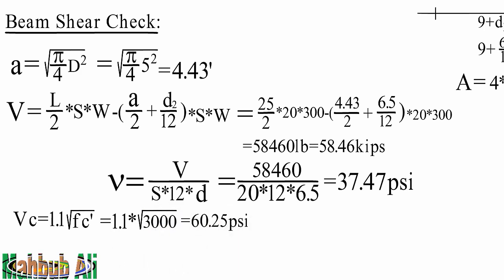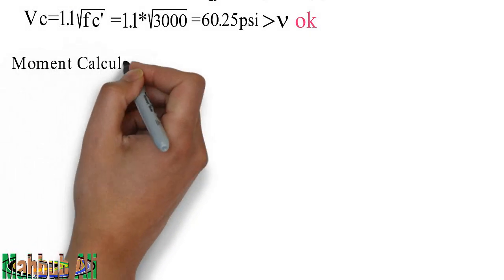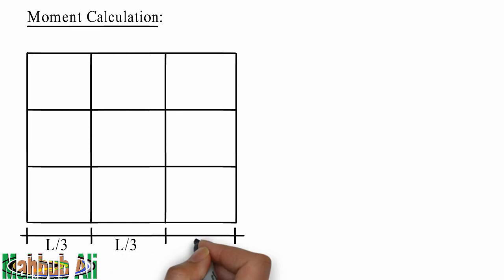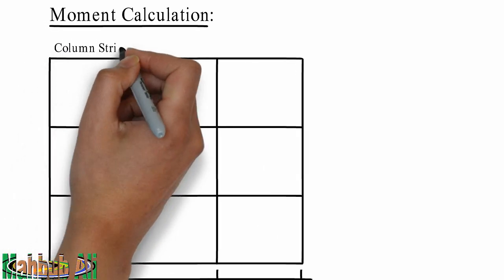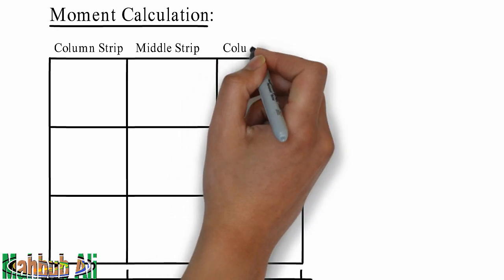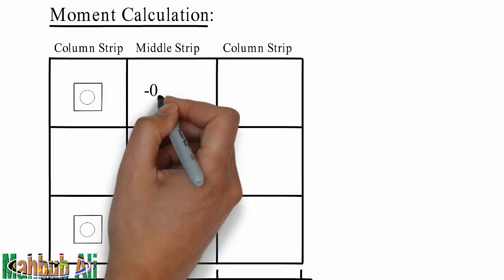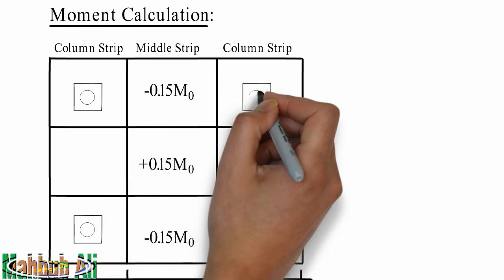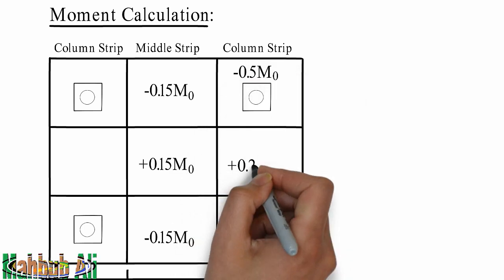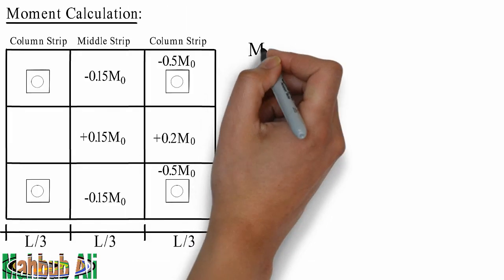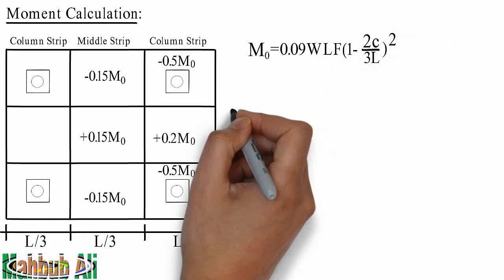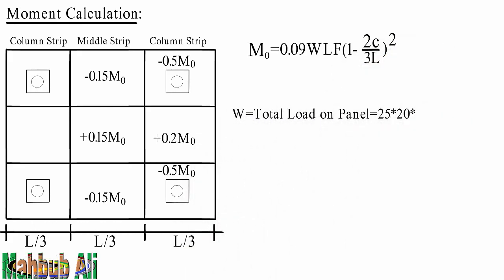7.5 PSI moment calculation. L divided by 3. Column strip, middle strip, Ebon column strip. W equal total load on panel: s into l into w.